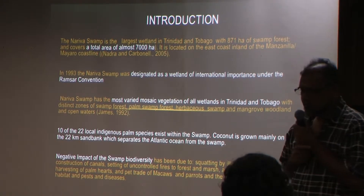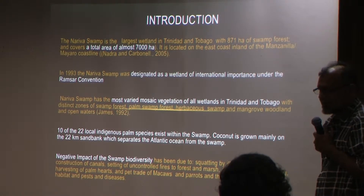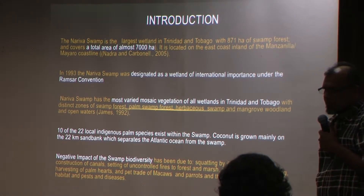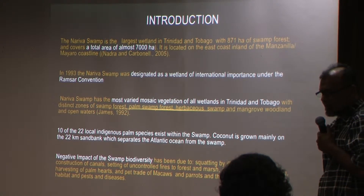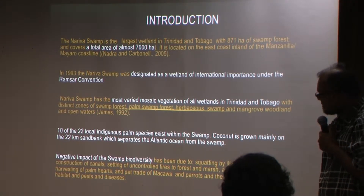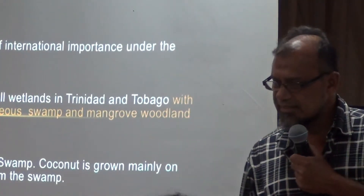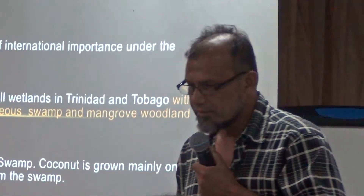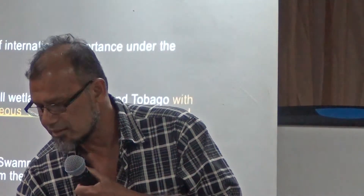There are a lot of negative impacts that normally affect the vegetation and the biofauna and flora of the Nariva Swamp — mainly things like fire, pests and diseases, and various other things I will point out a little later.